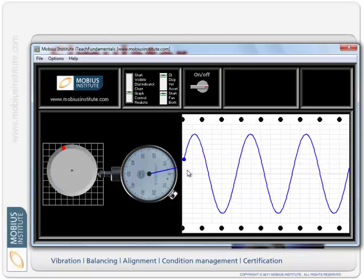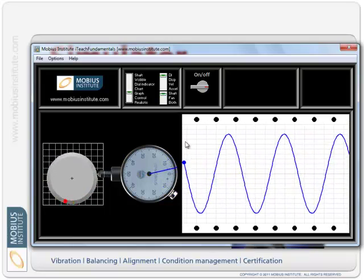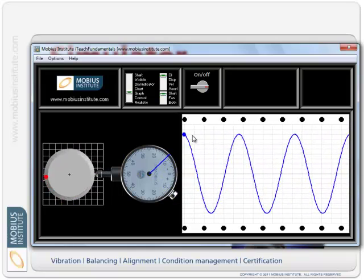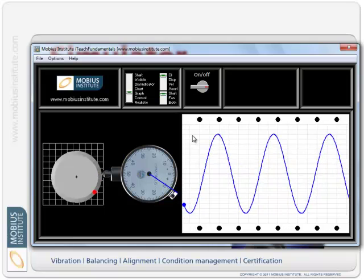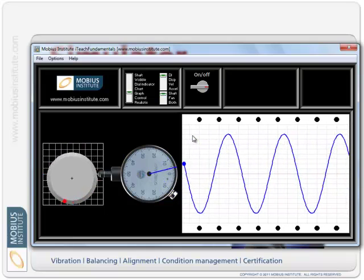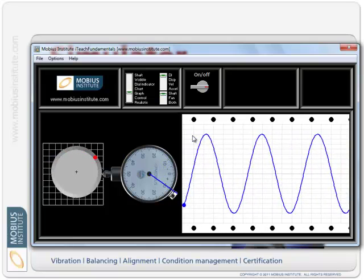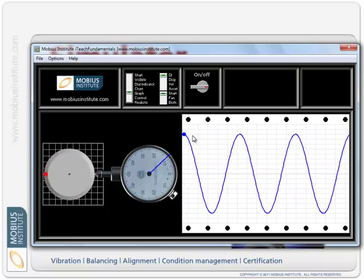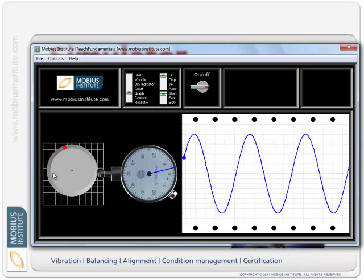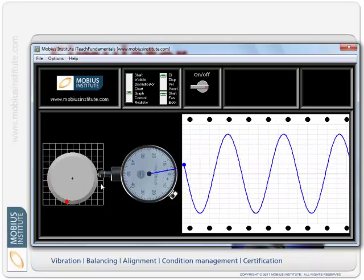That blue pen, which you can see, is still just moving up and down in line with the needle of the dial indicator. It leaves a pattern on the chart, and that pattern is called a sine wave. That waveform that we see there represents one single frequency, and that frequency corresponds to the rotating speed of this shaft. Now there are a few things we can do.